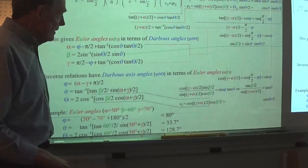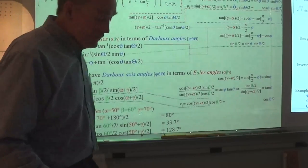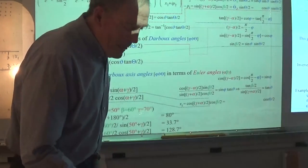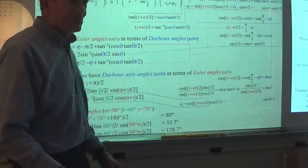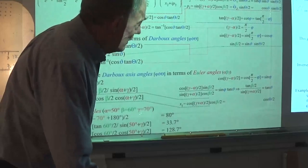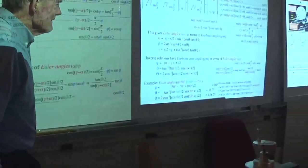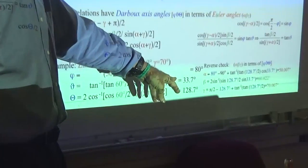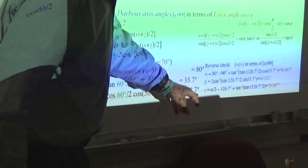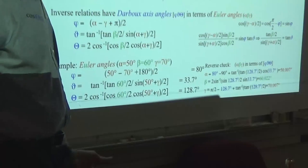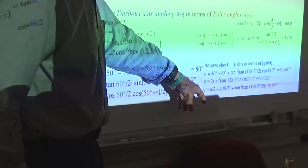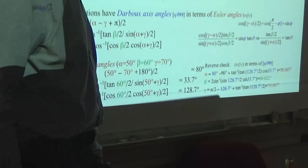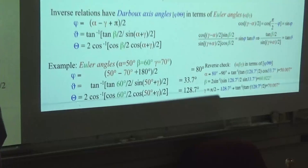When we substitute the crank angles back into the inverse formulas, we get: alpha equals 50.007, beta equals 60.022, and gamma equals 70.007 — all within the precision we're carrying. So it works. What I'd like to do now is show you what makes this possible. I'm going to set this to a particular value — the hardest one to set is actually the gamma down at the base. I'm going to set alpha at 50 and beta at 60.